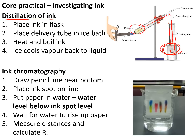We also did ink chromatography where we took a piece of chromatography paper, drew a pencil line on it, and placed some spots of different inks on the pencil line. Then we placed the chromatography paper in some water, with the water coming below the level of the pencil line. The inks rose up the paper as the water soaked up the paper and separated out the different colours. We then measured the distances and calculated the RF for each one.